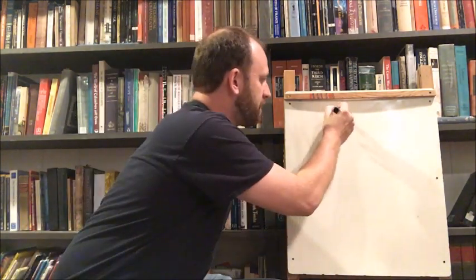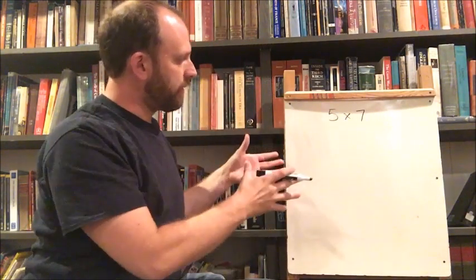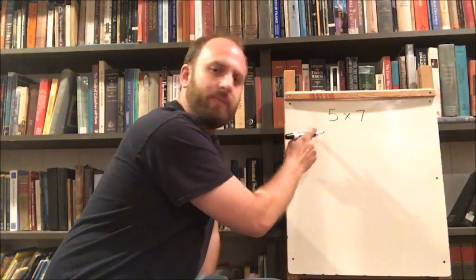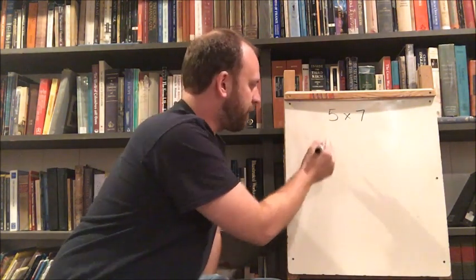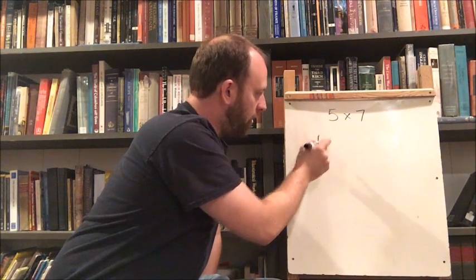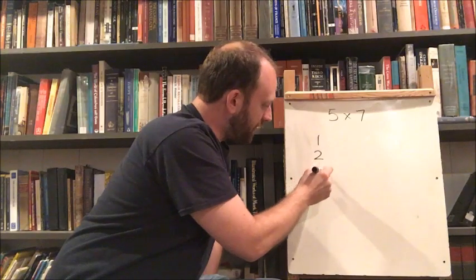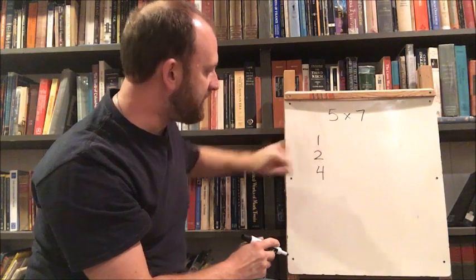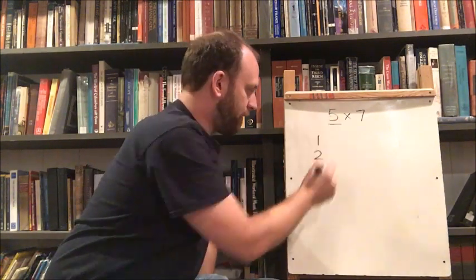So let's start with a simple equation like five times seven. So the first thing we're going to do, we're going to take one of these factors. It doesn't matter which, but let's start with five. And we're going to make a list of integers starting with one, and we're going to double them until we can add up to five. So here's what I mean. We'll start with one, then we double one to get two, we double two to get four. Now at this point we see I can add these up to make five. Four plus one equals five, our first factor.